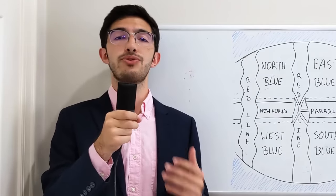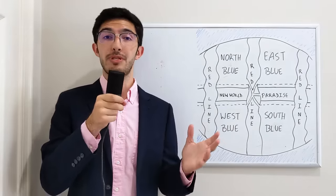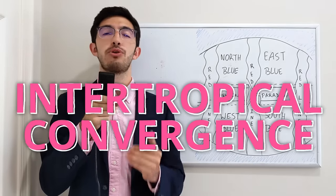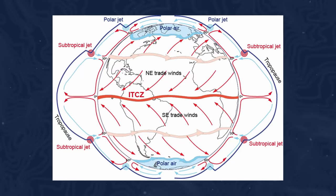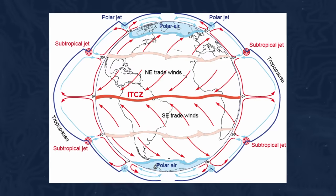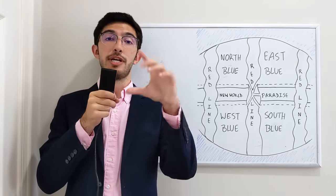And this, once again, is something that we also see in the real world to an extent. If we go back to what I was saying about the doldrums, the doldrums are actually also known as the Intertropical Convergence Zone, which is once again a belt of ocean around the equator that essentially results from a high amount of solar radiation year-round.